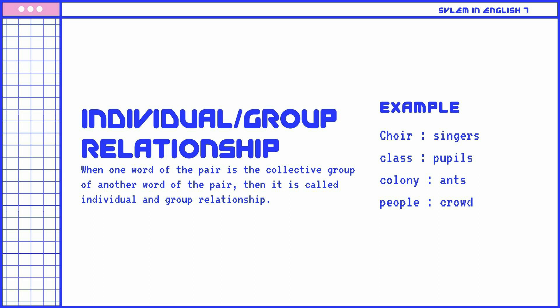Finally, individual-group relationship: When one word of the pair is the collective group of another word of the pair, then it is called an individual-and-group relationship. Examples: Choir is to singers. Class is to pupils. Colony is to ants. People is to crowd.